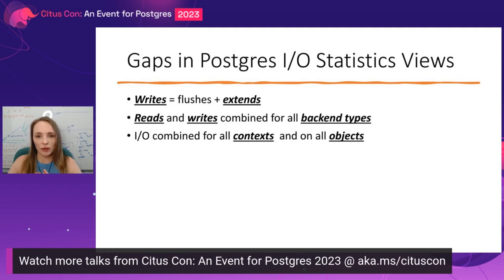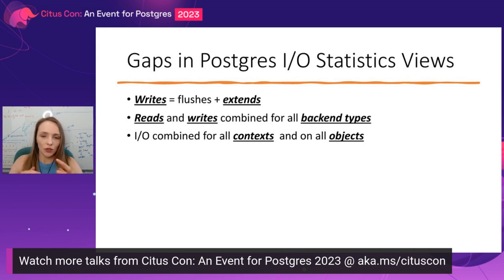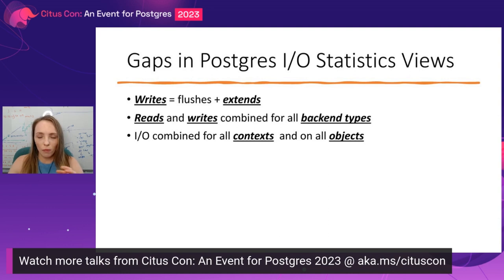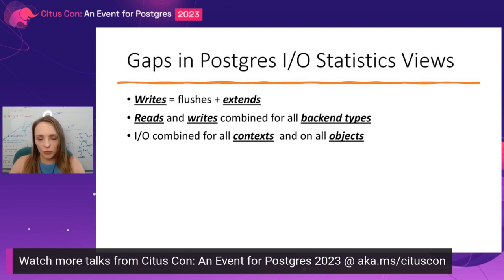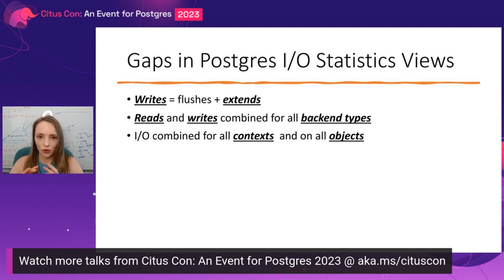There are three main gaps that PGStat.io is addressing. First, in all of the existing IO statistics, writes include flushes and extends — I'll talk about what that means and why it matters. Another problem is granularity: all backend types — whether that's checkpointer or background writer — are all included in the same statistics; you don't see it broken down. And then you're also going to see IO for all different contexts combined together.